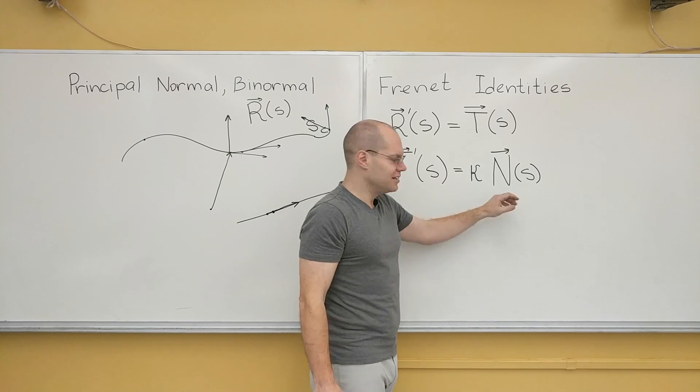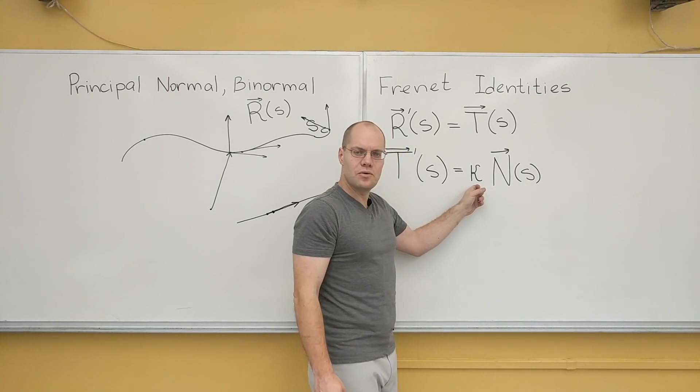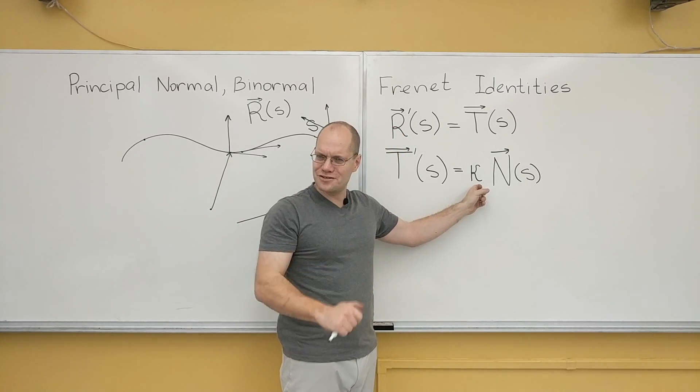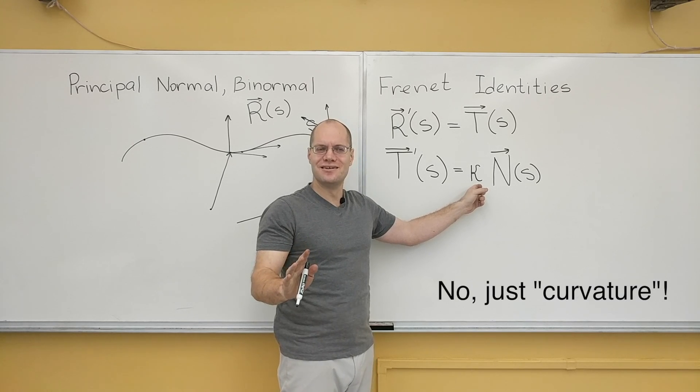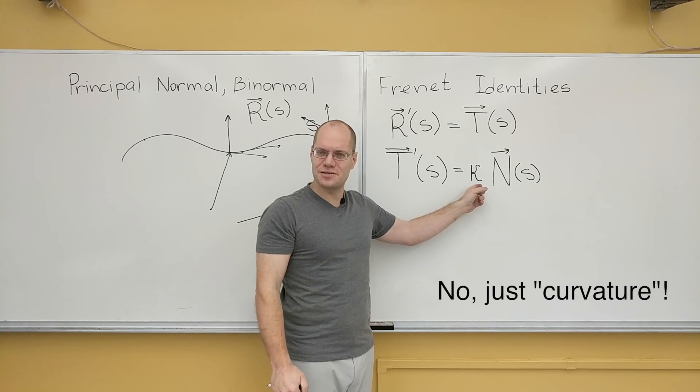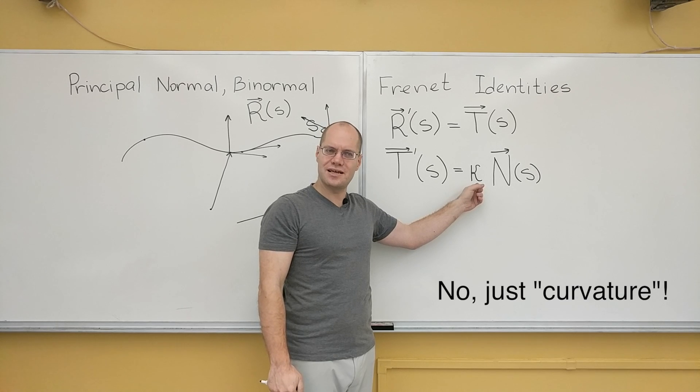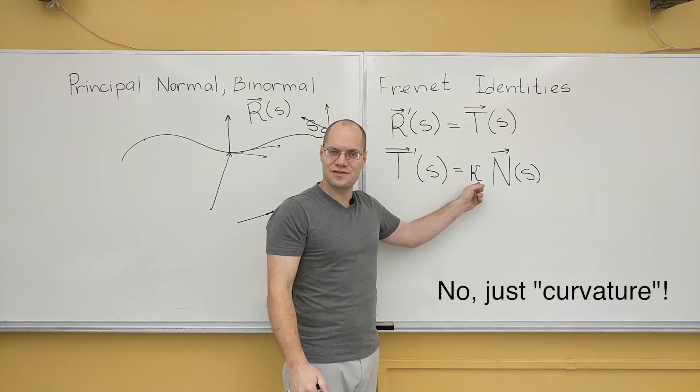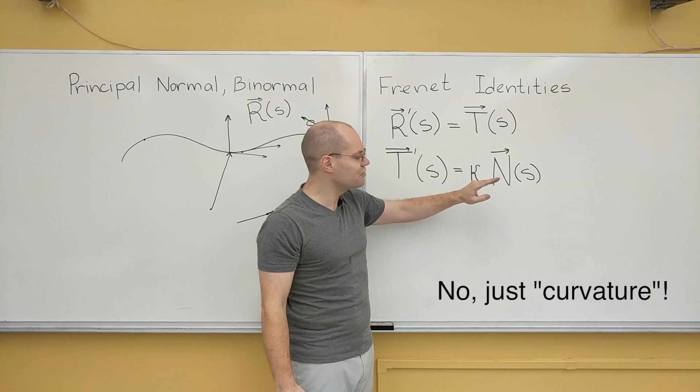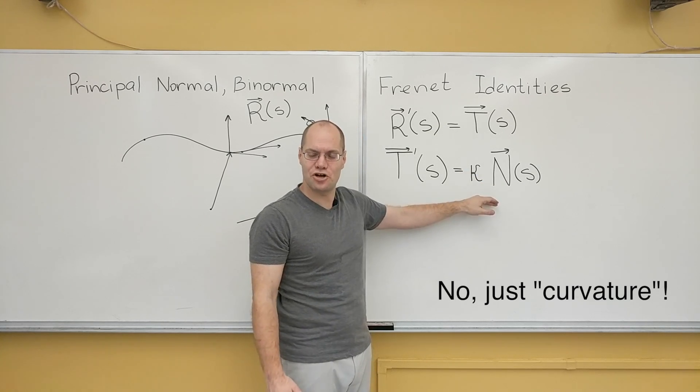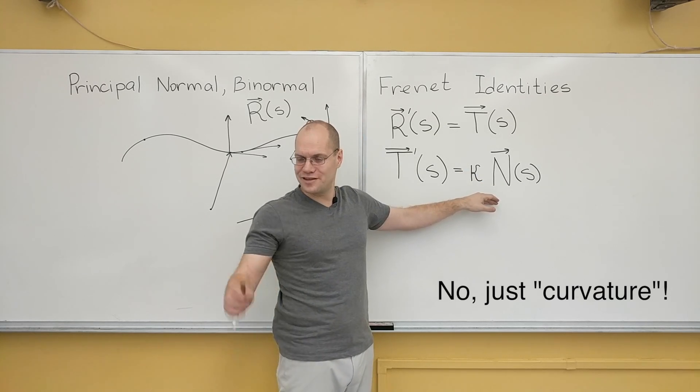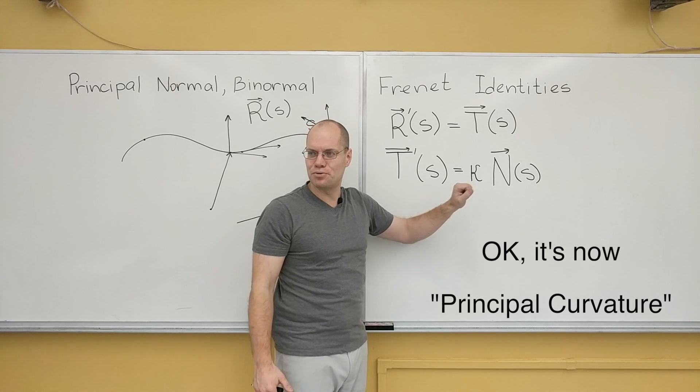Okay. So this is called the principal normal. And this is called, is it called the principal curvature? Curvature for sure. But I think you've got to call it the principal curvature, which is once again different from curvature when we talk about surfaces. So this is called the curvature, the principal curvature. And if it's not called that, I'm calling it that. The principal curvature.